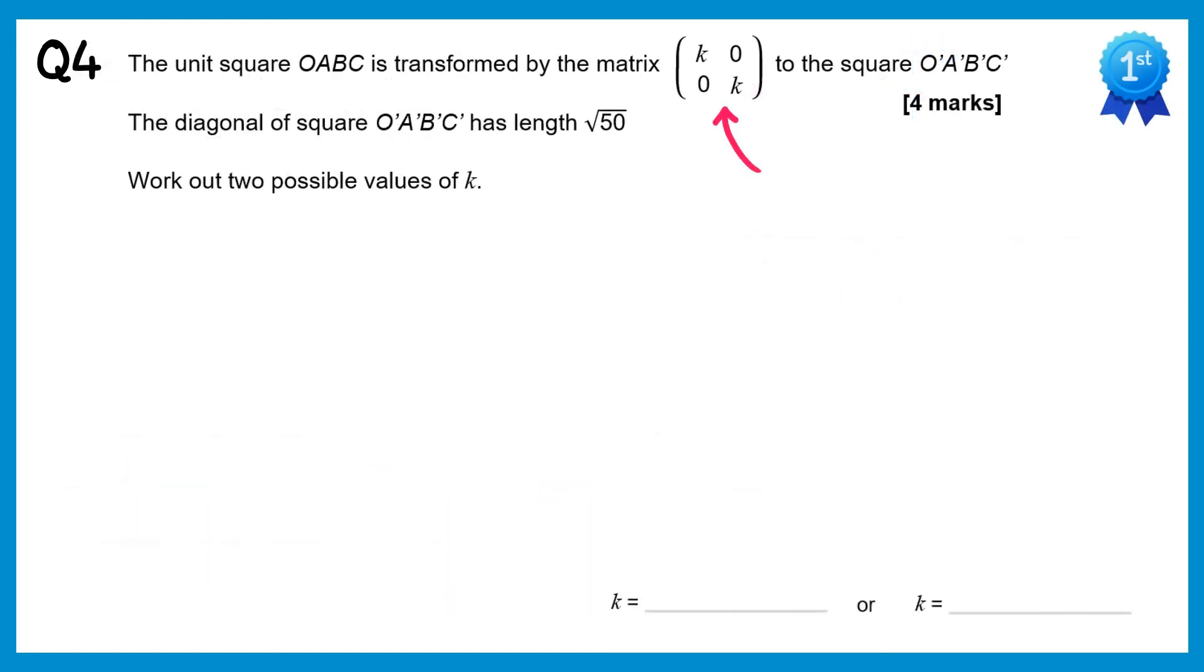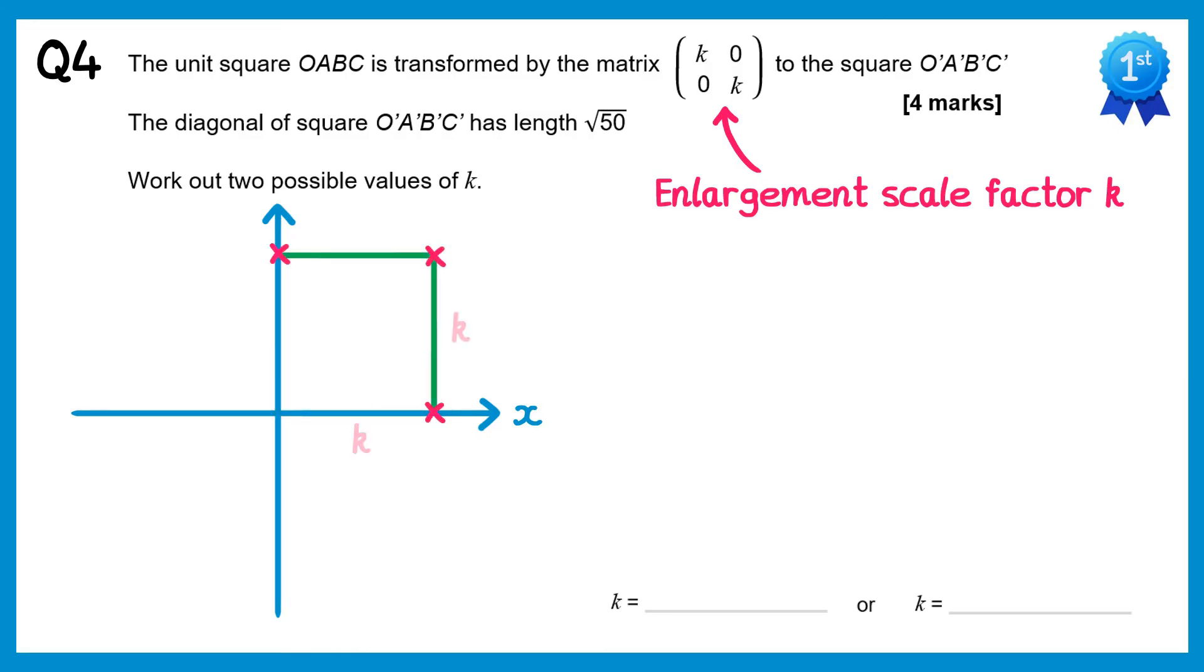The matrix is an enlargement scale factor k with center the origin. So if we had the unit square, and we did this matrix transformation, we'd end up with a new square, but the side length would be k. We're also told in the question the diagonal of this square is square root 50.